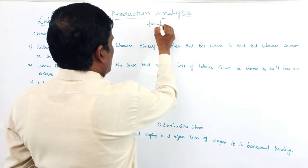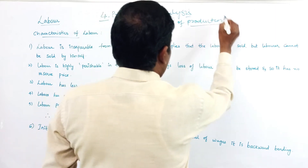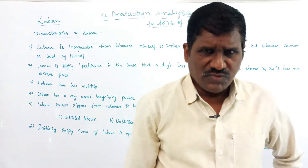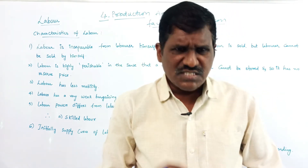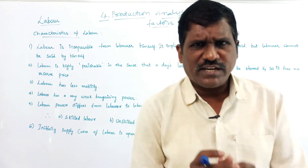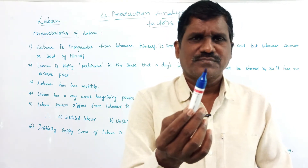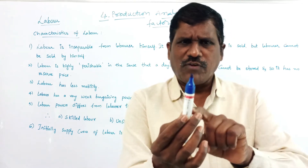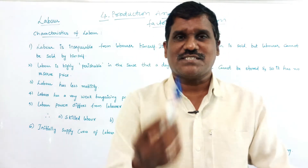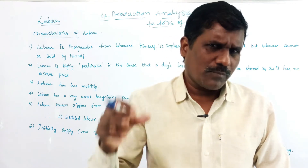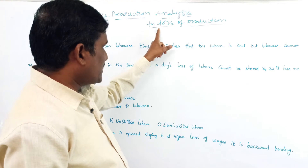What are called factors of production? The factors of production are helpful in the process of production. They are supporting factors — helpful in the process of production. Suppose you want to produce a final good — the factors of production support that. They are helpful in the production process. These are called factors of production.